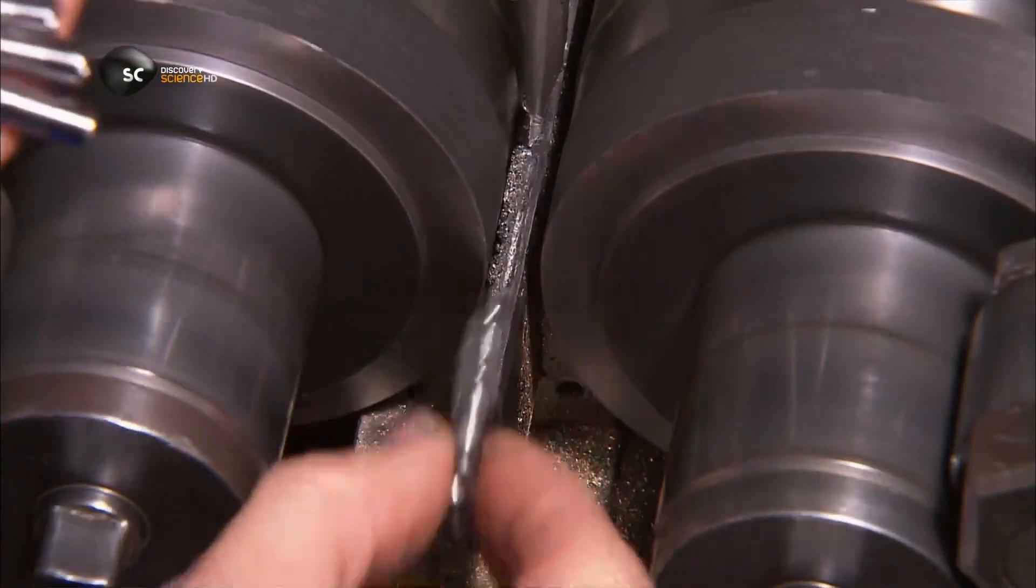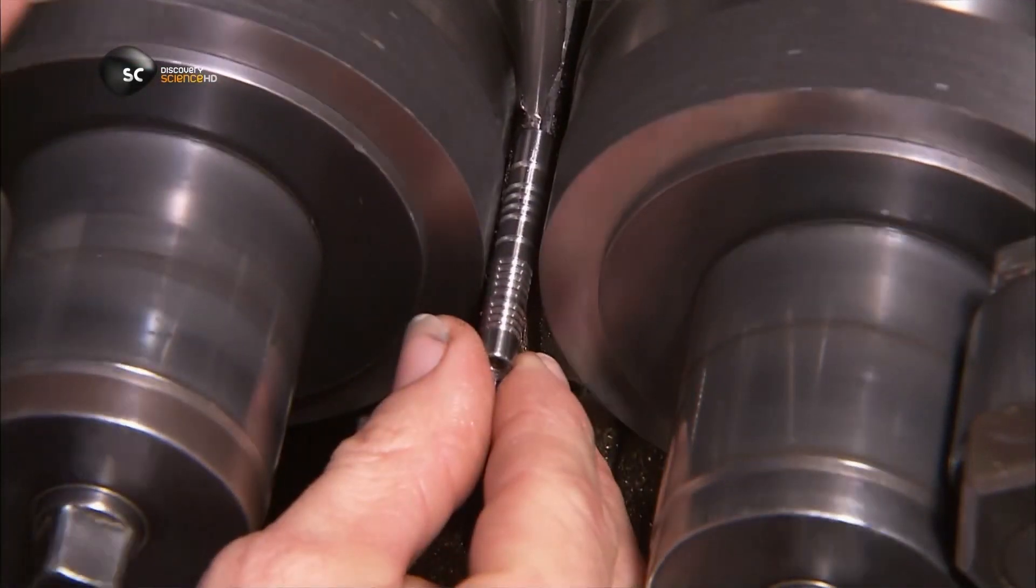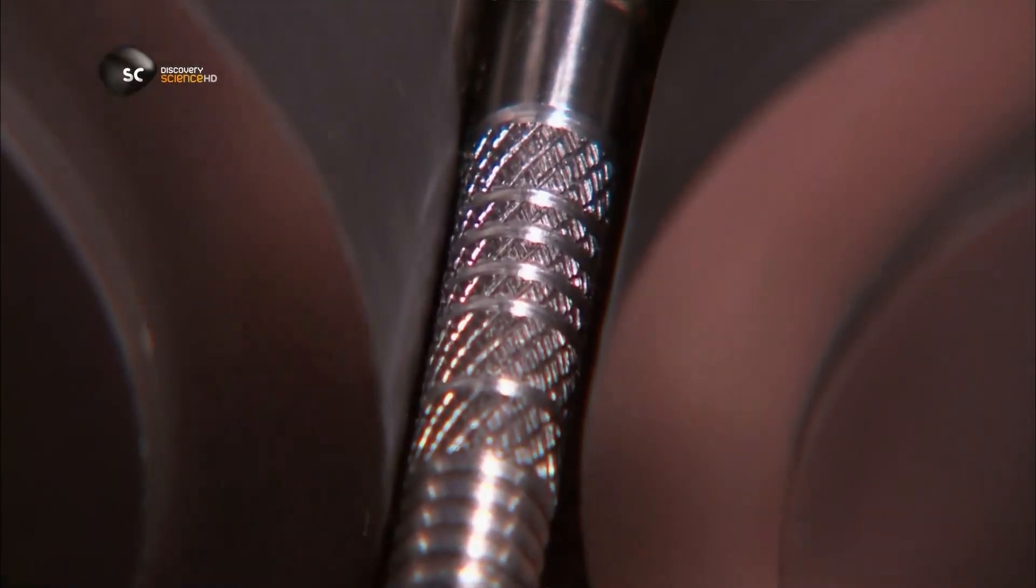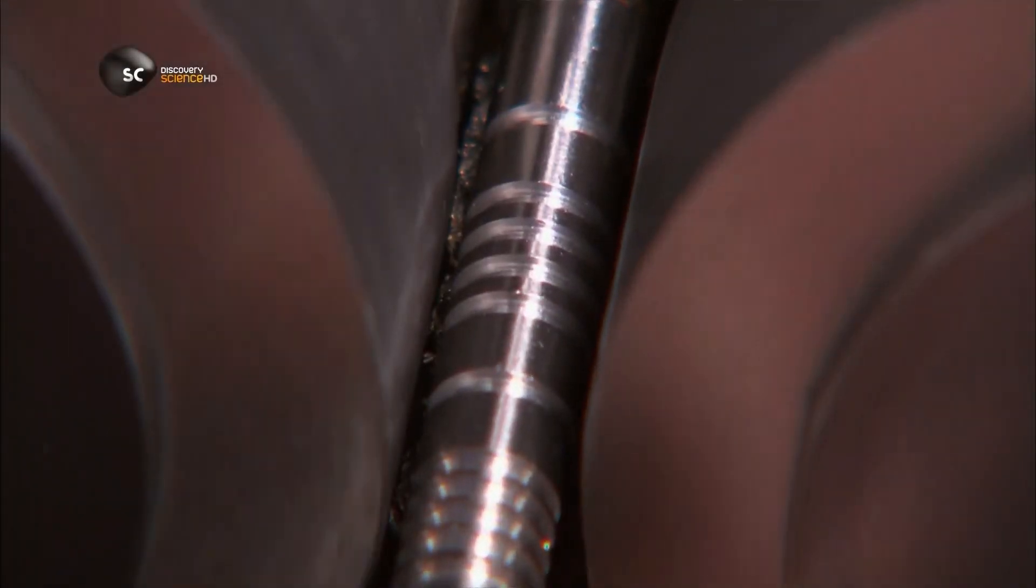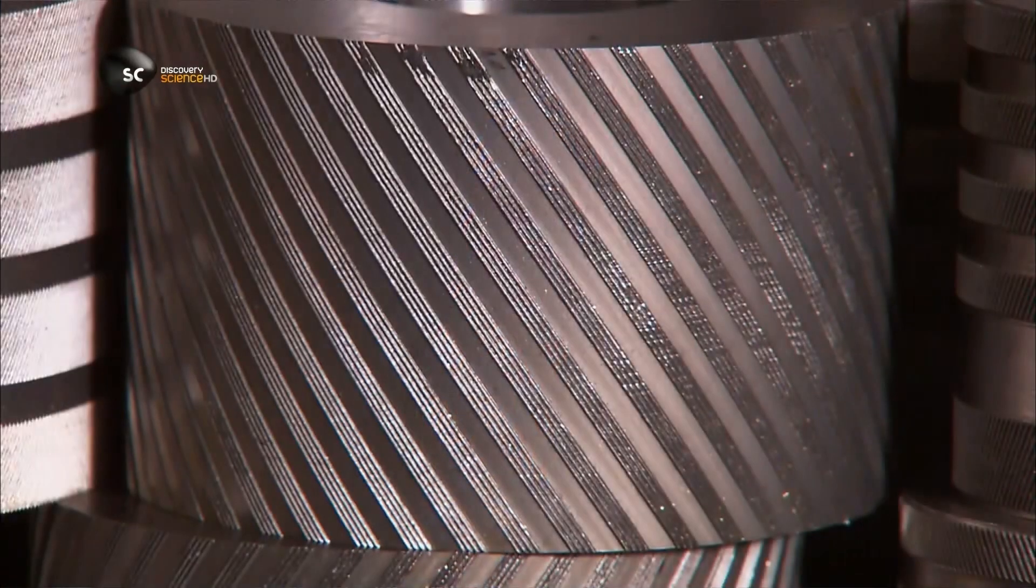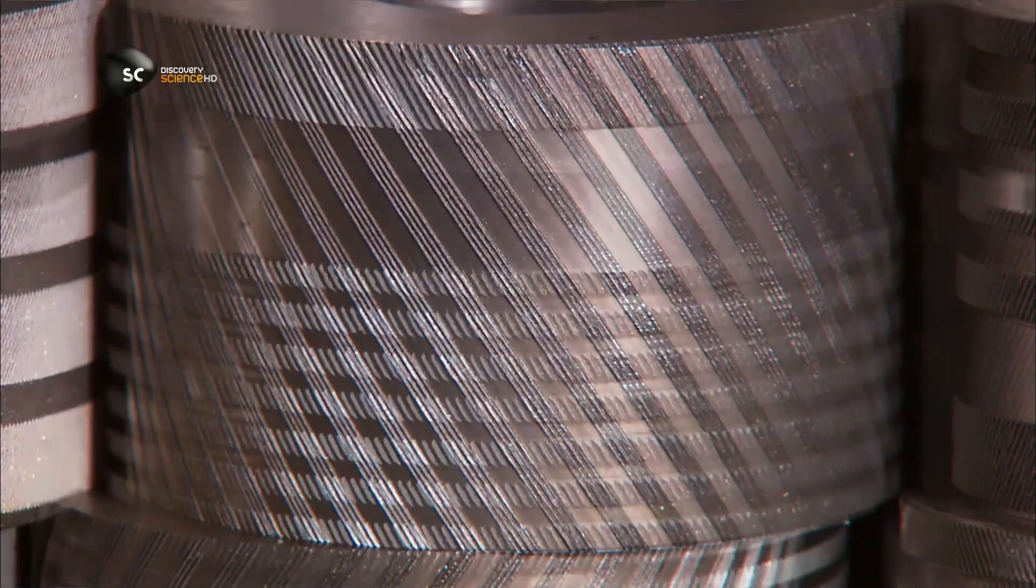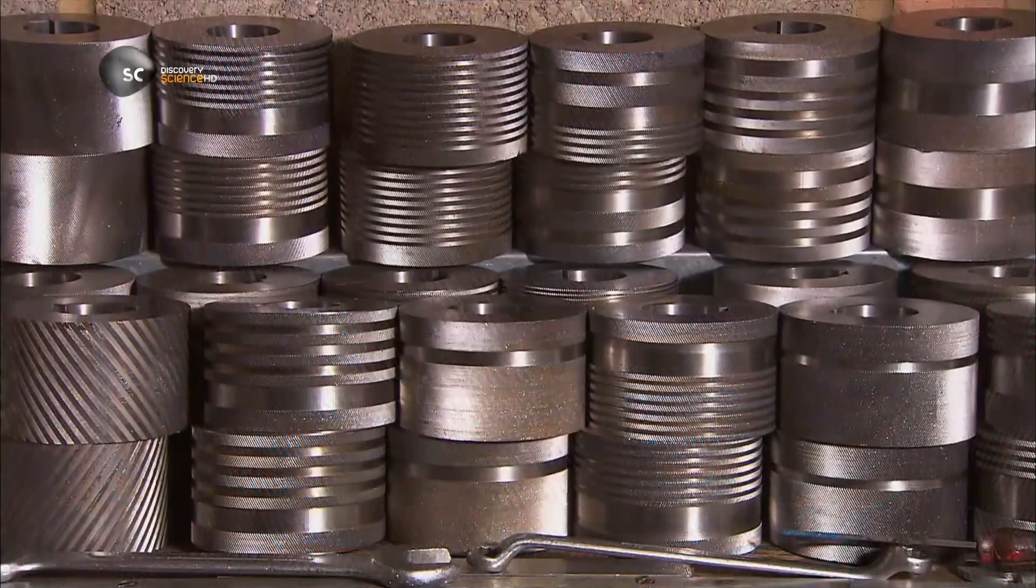These are the knurling wheels. It's another way to etch the grip pattern into the dart barrels. Knurling wheels come in an assortment of patterns, all designed to help you keep a grip on your game.